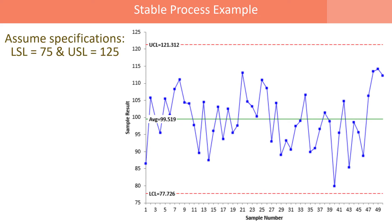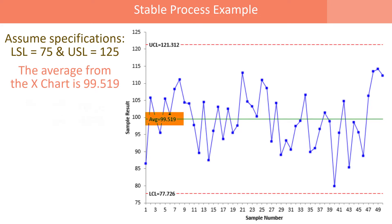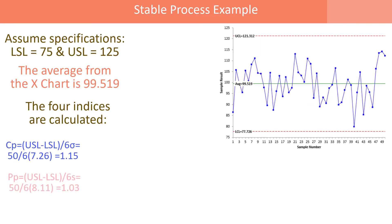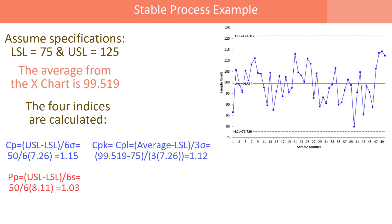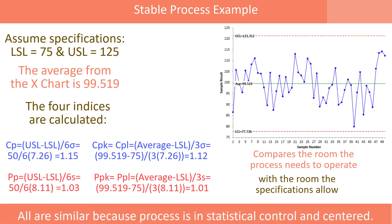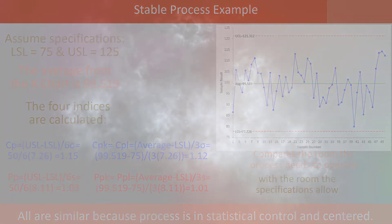Assuming specs are 75 and 125, with the average from the X chart at about 99.519 — very close to the center of specifications — we calculate CP = 1.15 and PP = 1.03, which are fairly close. CPK is based on the lower spec (closest to the average) at 1.12, and PPK is 1.01. These four metrics are all very similar because our process is in control and it's centered.